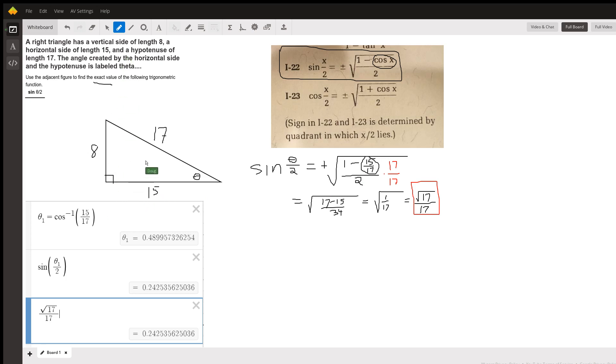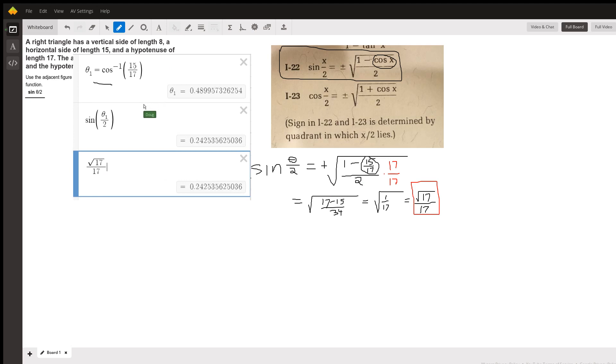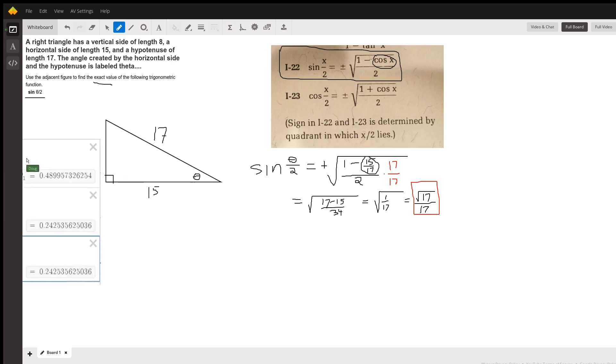And here's sort of proof of that fact. I did this on decimals. I said theta 1 is the angle that has a cosine of 15/17. This is in radian measure, by the way. And if I take the sine of that angle divided by 2, I get 0.24253, blah, blah, blah. And the square root of 17 over 17 has the same decimal value. So it looks like square root of 17 over 17 is the exact value for the sine of this angle theta.